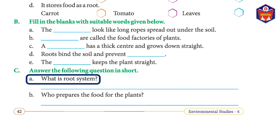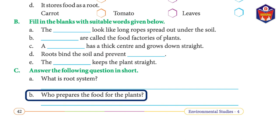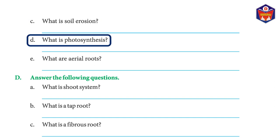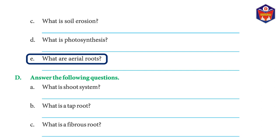Exercise C — answer the following questions in short. (a) What is the root system? Answer: The part of the plant under the soil forms the root system. (b) Who prepares the food for the plants? Answer: Leaves prepare the food for the plants in the presence of sunlight, air, water, and chlorophyll. (c) What is soil erosion? Answer: Heavy rain and strong winds wash or blow away the topsoil — this is called soil erosion. (d) What is photosynthesis? Answer: Plants making food in the presence of sunlight, water, air, and chlorophyll is called photosynthesis.